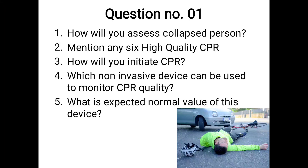Without wasting any time, let's begin. The first question: how will you assess the collapsed person? An image was given during the examination. You have to write the answer very fast and in a very short manner. You should write: check scene safety, check response, activate the emergency system, then check pulse and breathing simultaneously for not more than 10 seconds.